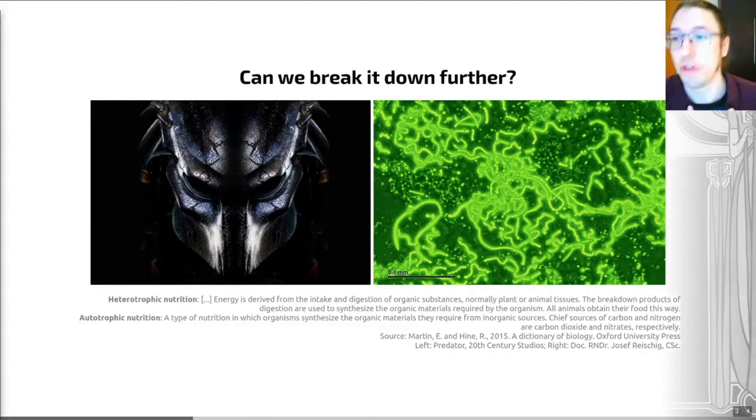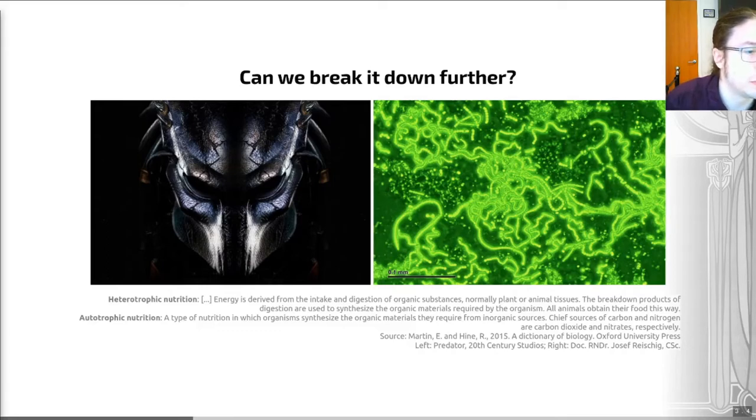We are heterotrophs. So I've actually given you a definition on this slide of what heterotrophic nutrition is. This is energy derived from the intake and digestion of organic substances, normally plant or animal tissues. The breakdown products of digestion are used to synthesize the organic material required by the organism. All animals obtain their food this way. So animals are a heterotrophic group.